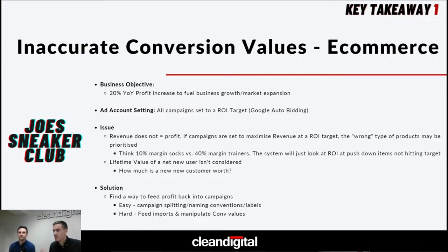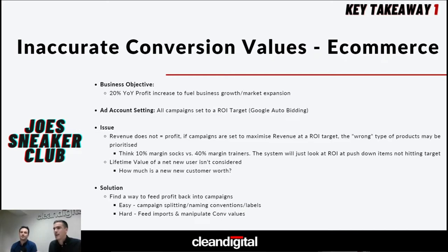Their account settings optimize towards return on investment at revenue level — revenue, not profit. A lot of e-commerce accounts do well optimizing towards revenue and ROAS; however, there can be massive differences in margins between product levels. Think of 20-to-10% margin on socks versus 40% margin on trainers. If Google is tunnel-visioned trying to optimize revenue at an ROI, it doesn't care about margin. Another consideration is lifetime customer value — a new customer could buy 10 trainers over their lifetime, so you need to assign more value to a new customer.